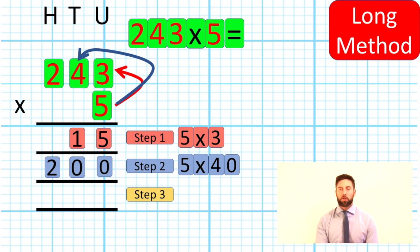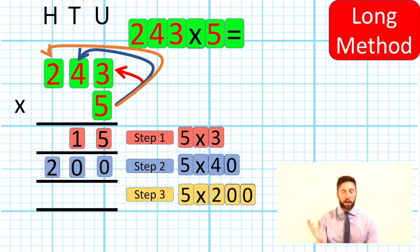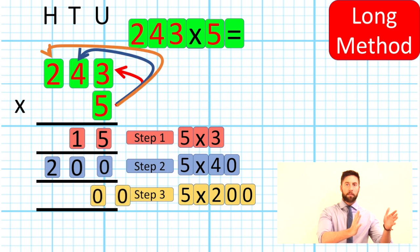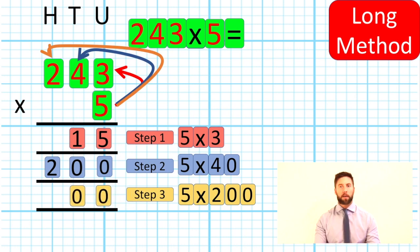Step 3: 5 times 2. But we now know it's not a 2. This is in our hundreds column, so it's a 200. So the question says 5 times 200. Now we might not want to work out 5 times 200, so we can use our understanding of place value. 5 times 200 is 100 times bigger than saying 5 times 2.